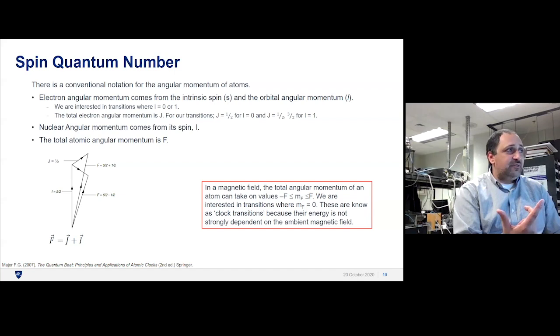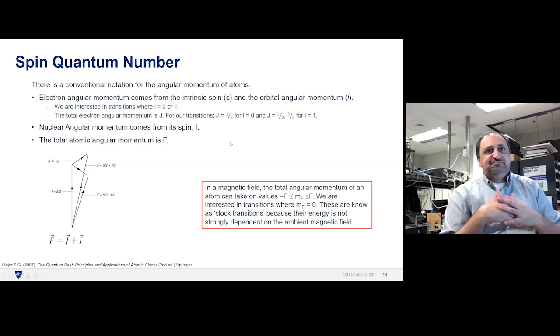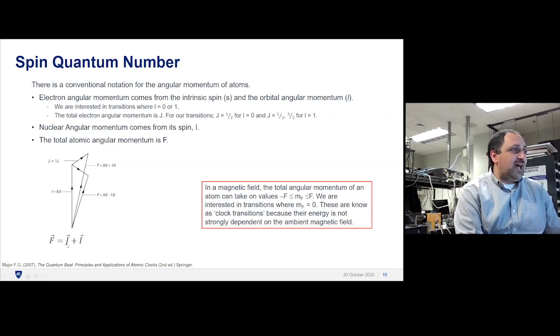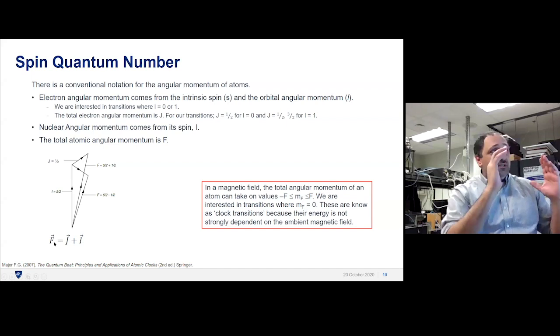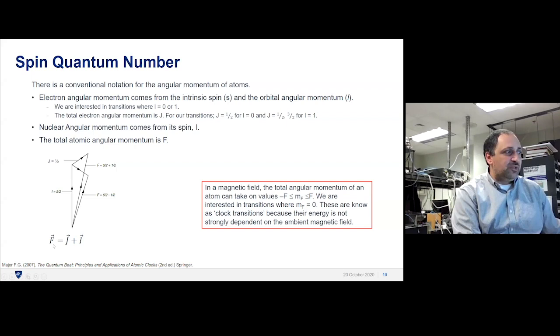Each nuclei have their own spin. It's quantized in units of a half—zero, one-half, one, seven-halves, five-halves. You add I and J to get F, the total atomic angular momentum. This is important. F is important. J is quantized, I is quantized, so F is quantized.